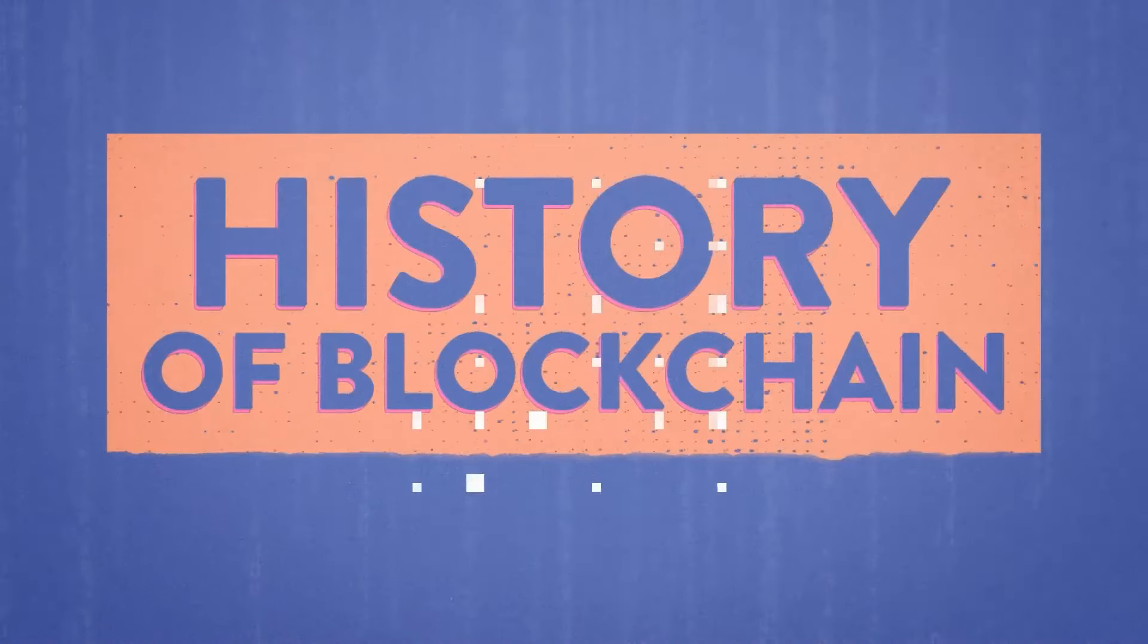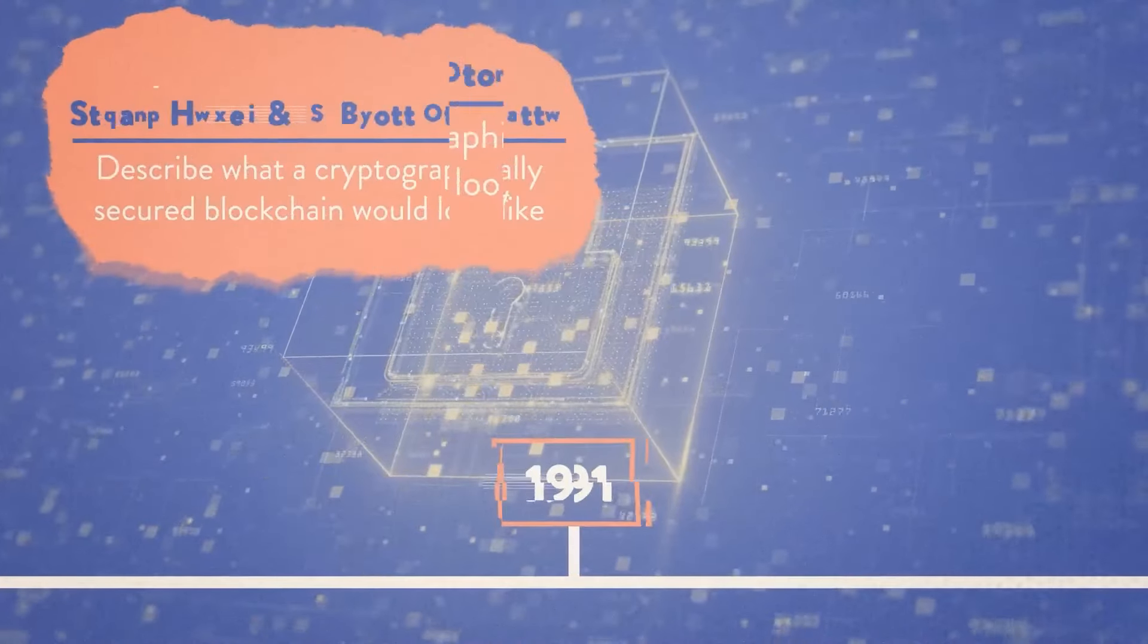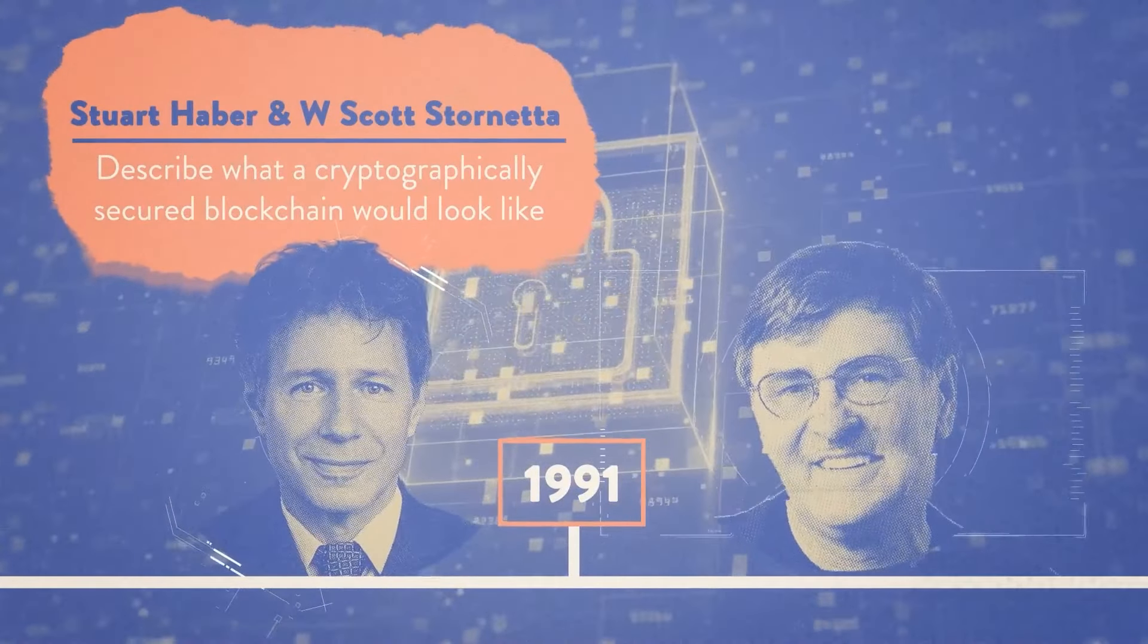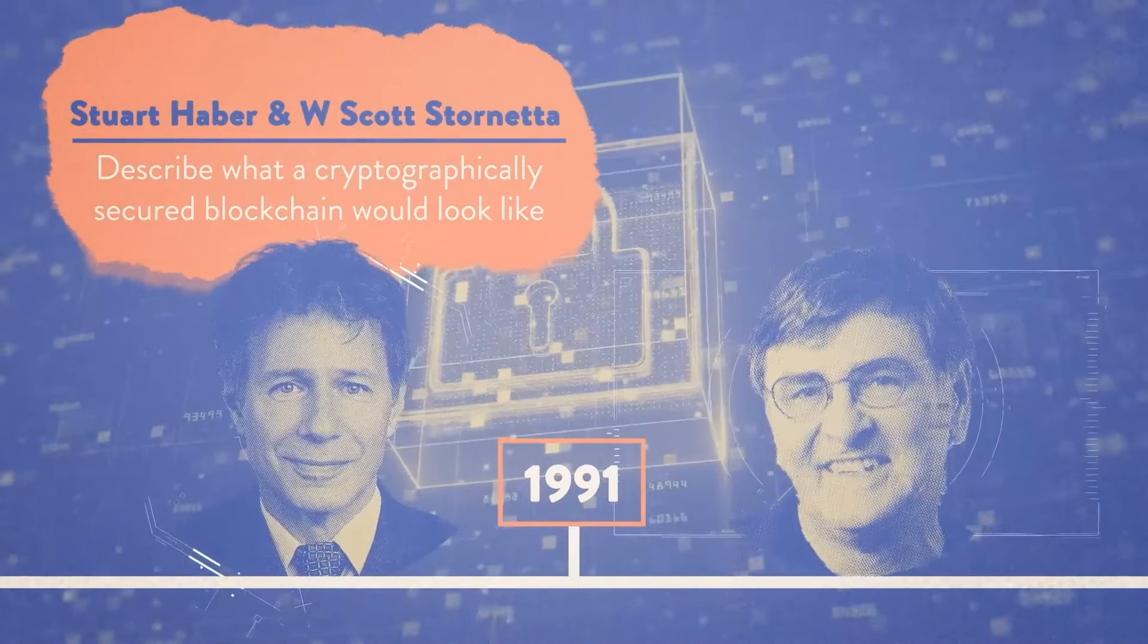History of blockchain. How did we get here? In 1991, Stuart Haber and W. Scott Stornetta are the first people to describe what a cryptographically secured blockchain would look like.